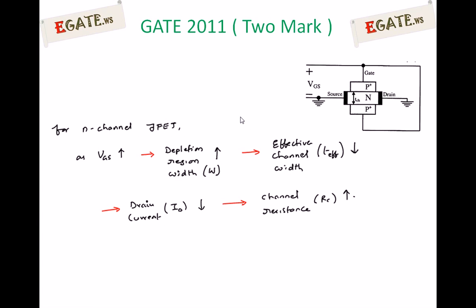For this question, you must understand the operation of an n-channel JFET. This is the JFET given. The P-plus regions on both sides are the two gates of the n-channel JFET, and these two gates are tied together — whatever voltage you apply externally to one gate is applied to both gates. In between the two gates there is an n-type semiconductor channel region. One side of that is the drain and the other side is the source, so current flows from drain to source.